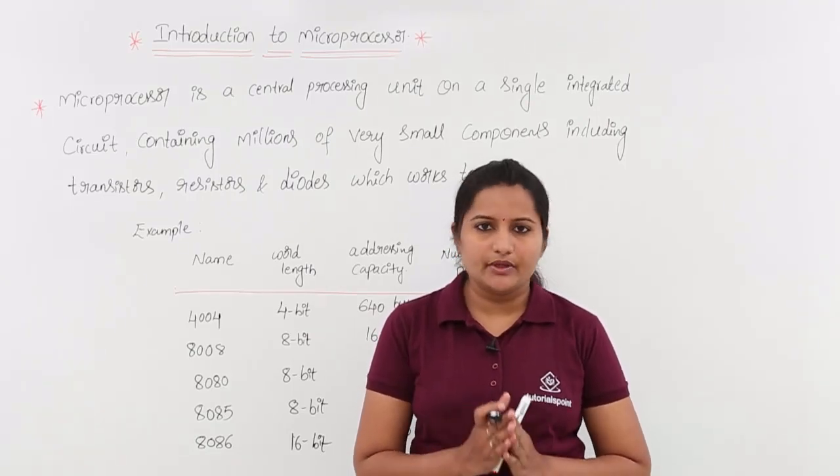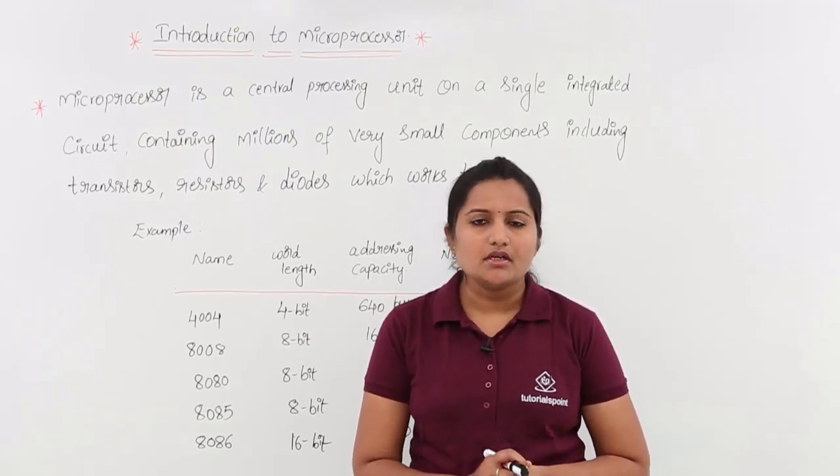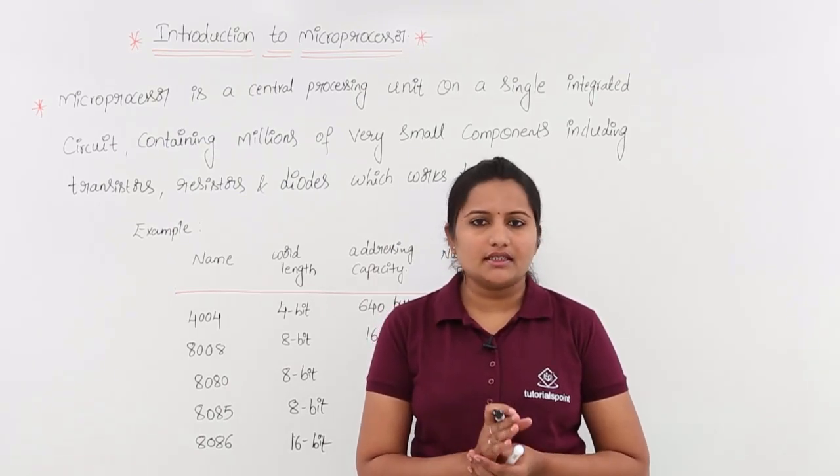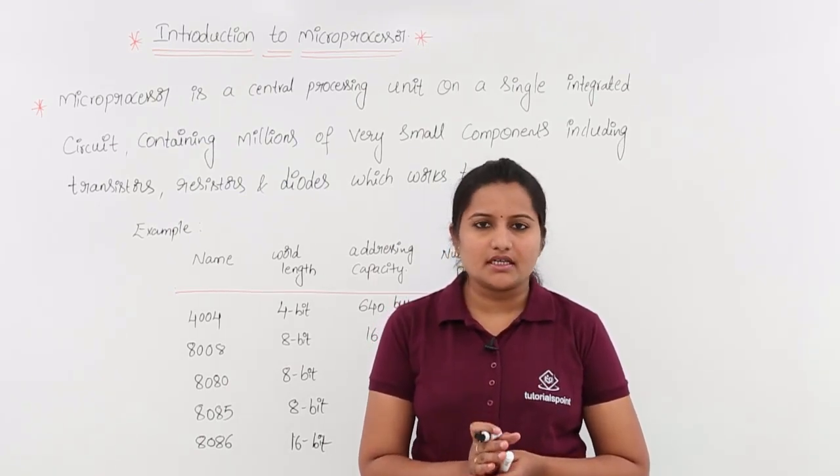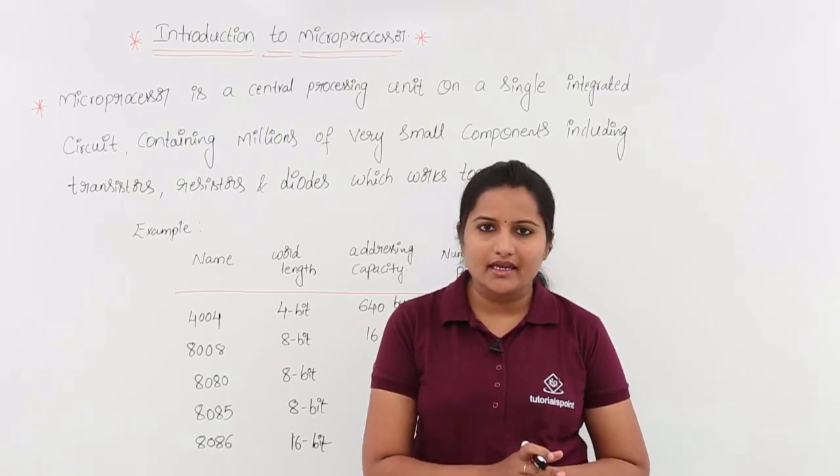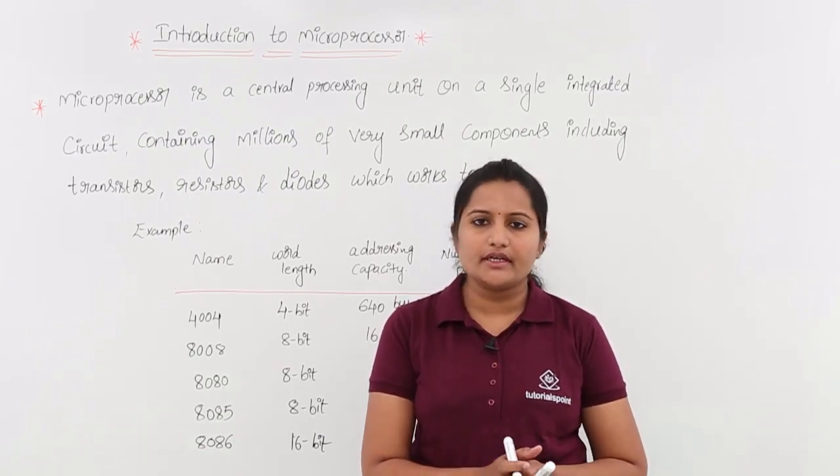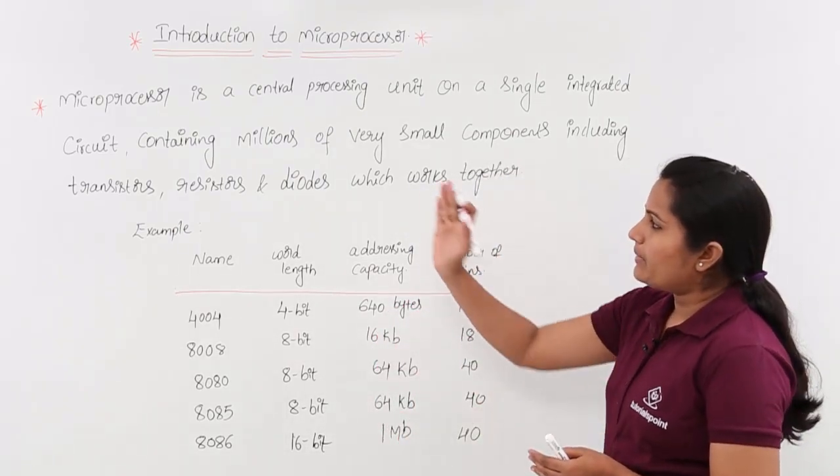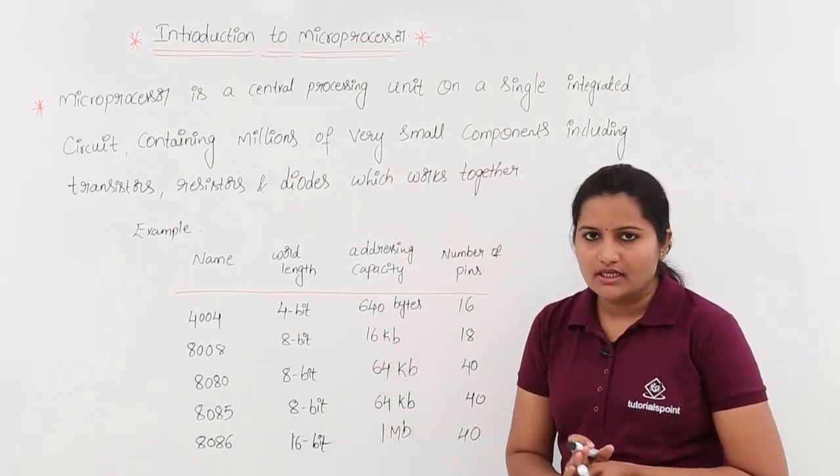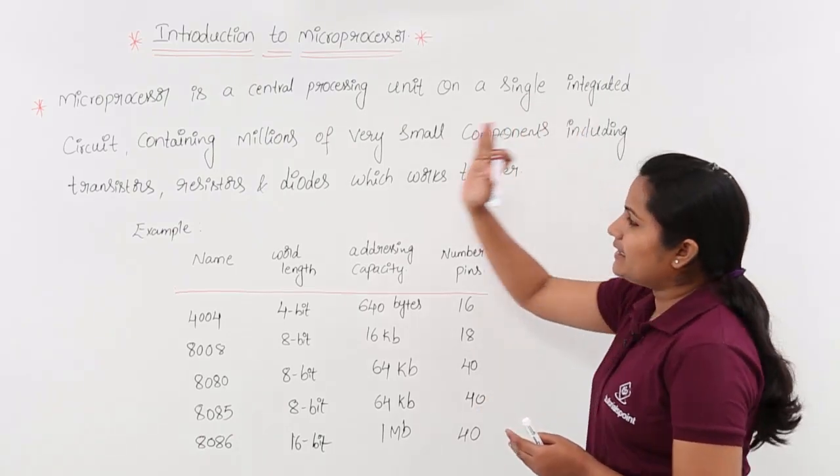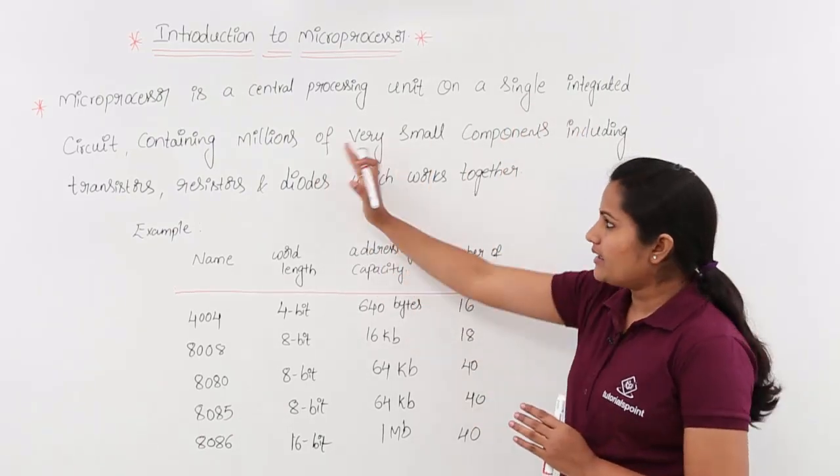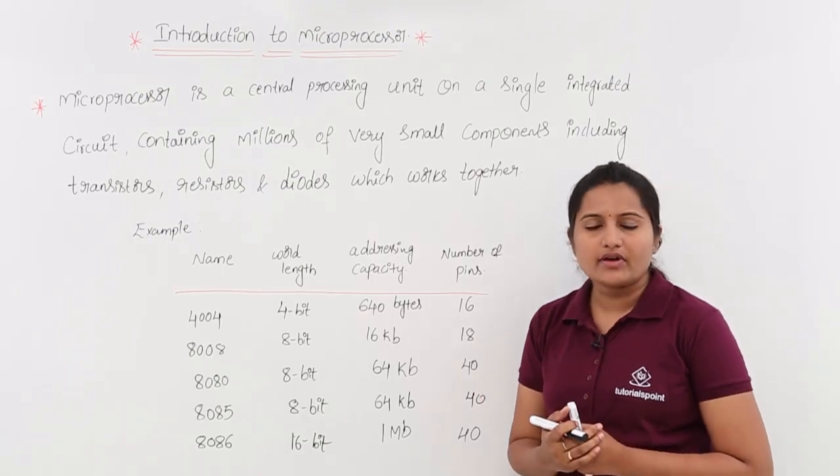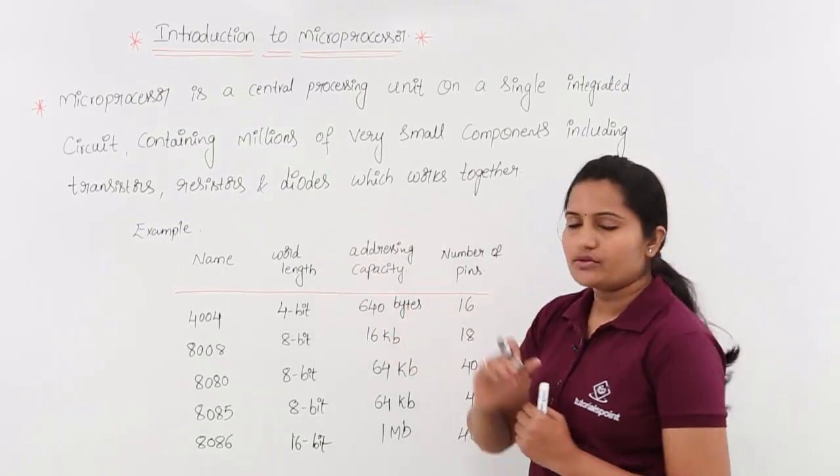Microprocessor is a CPU in a microcomputer. Here in this microprocessor, this is nothing but a single integrated circuit which combines ALU and control unit and memory. Here you can see the definition of a microprocessor. Microprocessor is a central processing unit on a single integrated circuit containing millions of very small devices including transistors, resistors, and diodes.